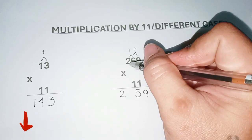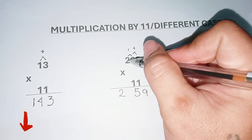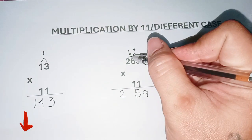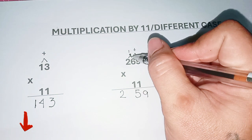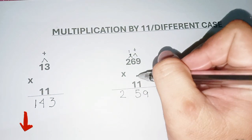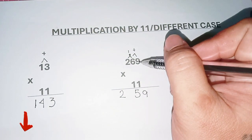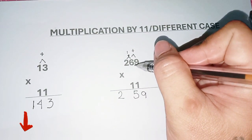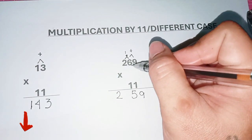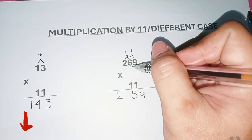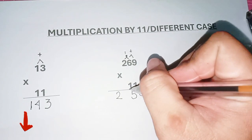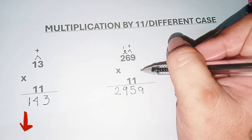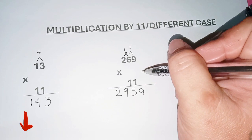Eight plus one carry gives nine. The space between two and nine is also nine. So the answer for 962 times 11 is two thousand nine hundred fifty-nine.